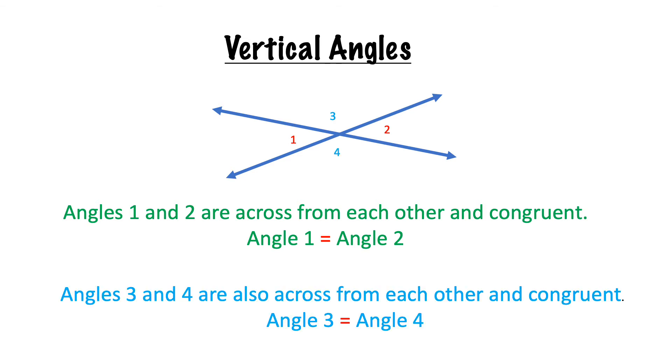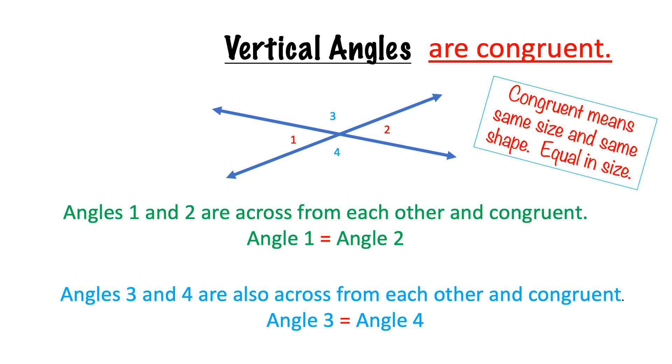Look at angles three and four now. They are also across from each other and congruent. Angle three equals angle four. Vertical angles are congruent. Congruent means same size and same shape. They are equal in size.